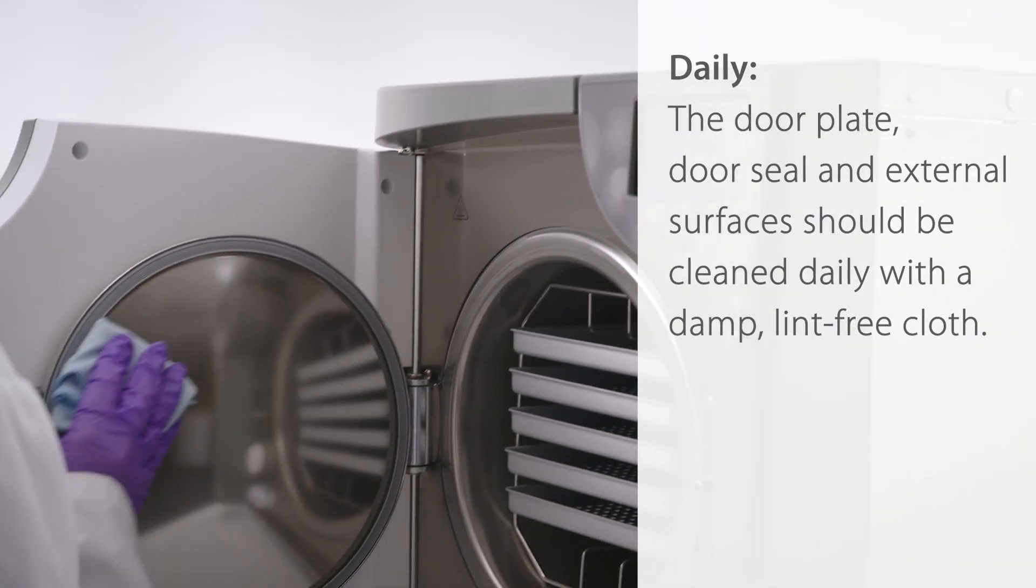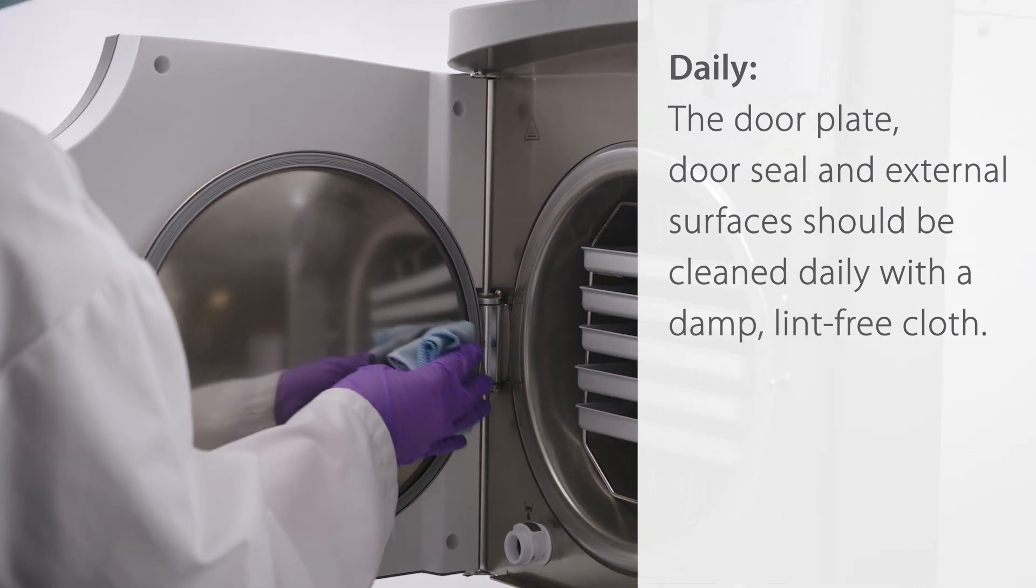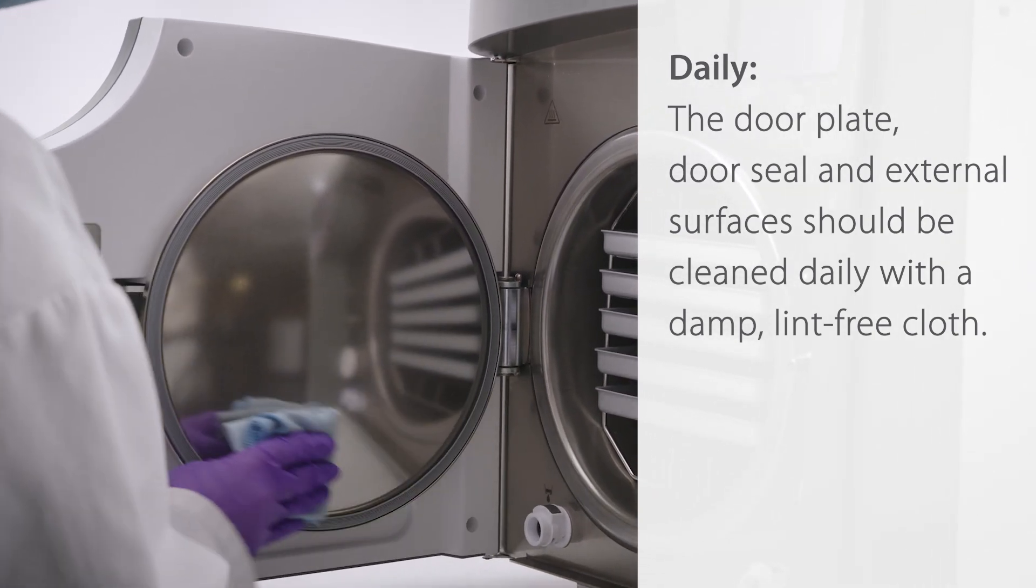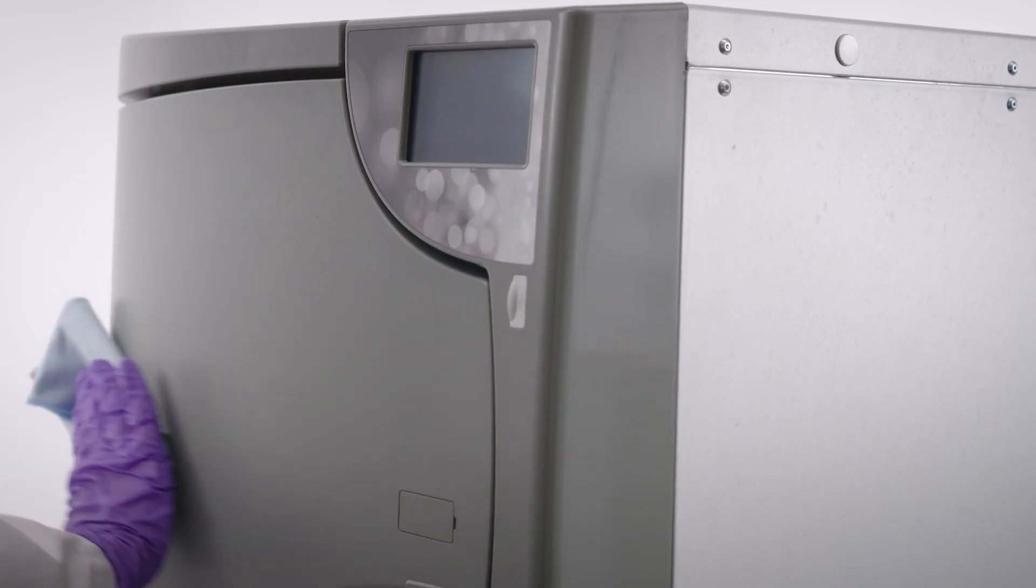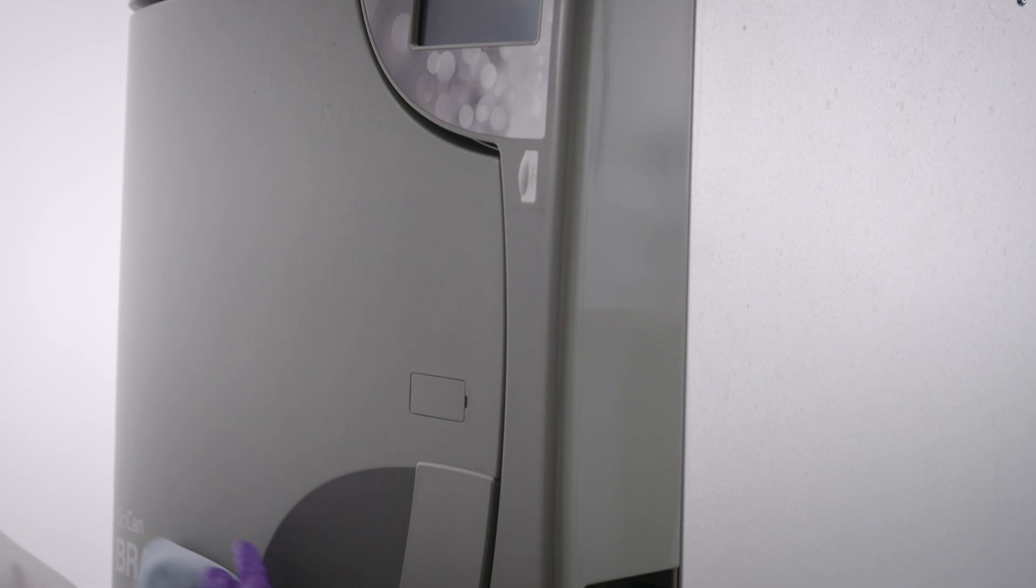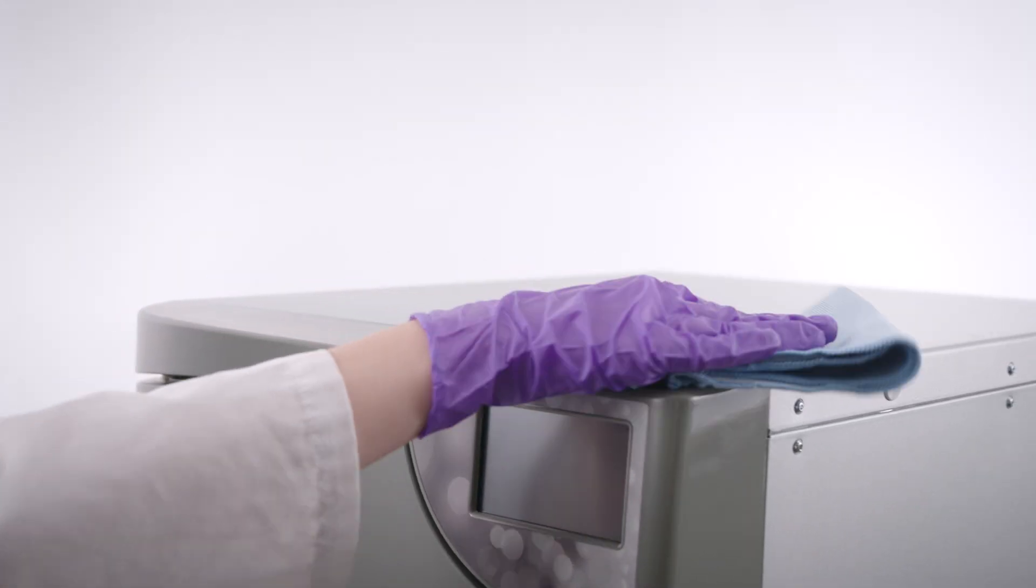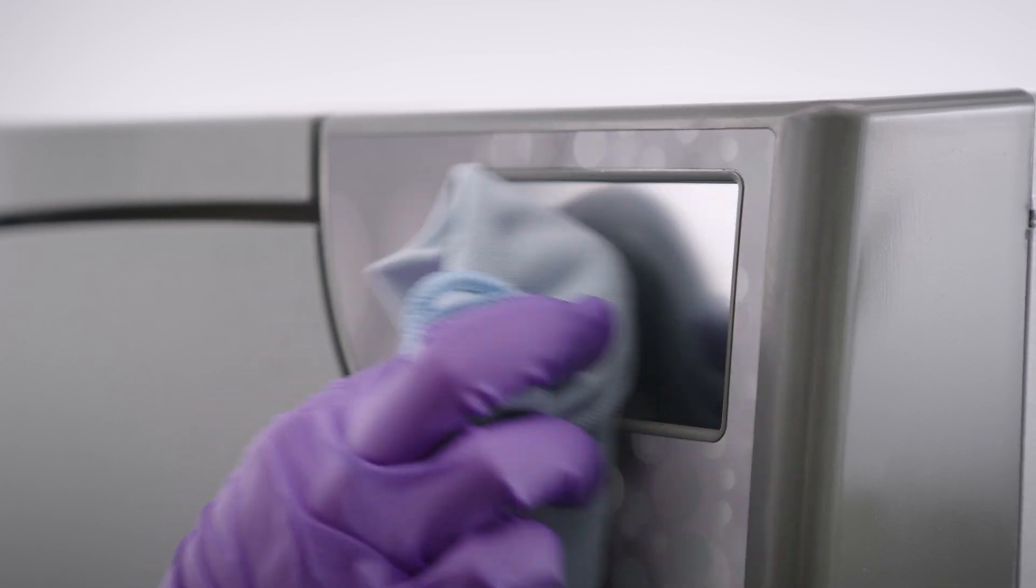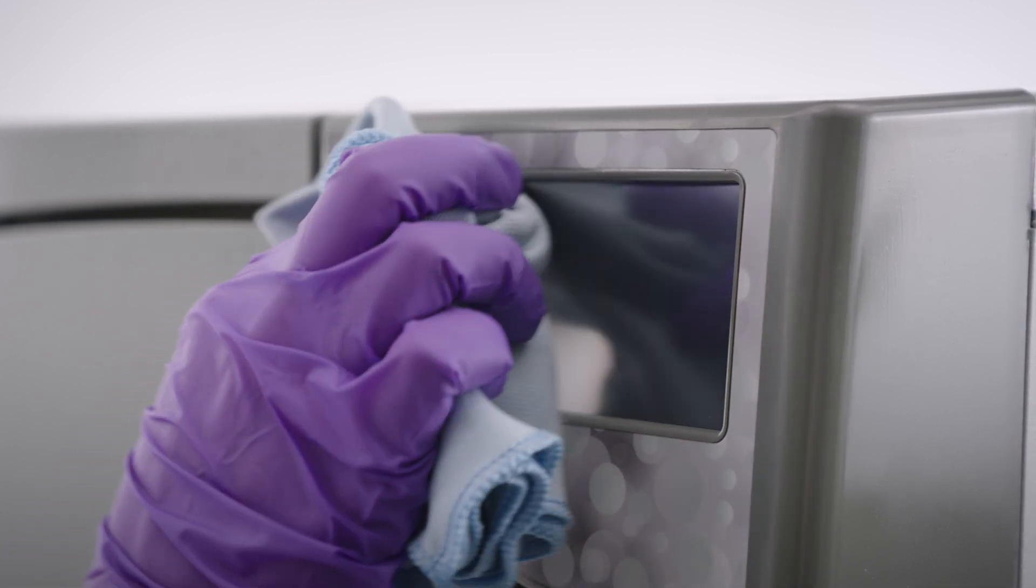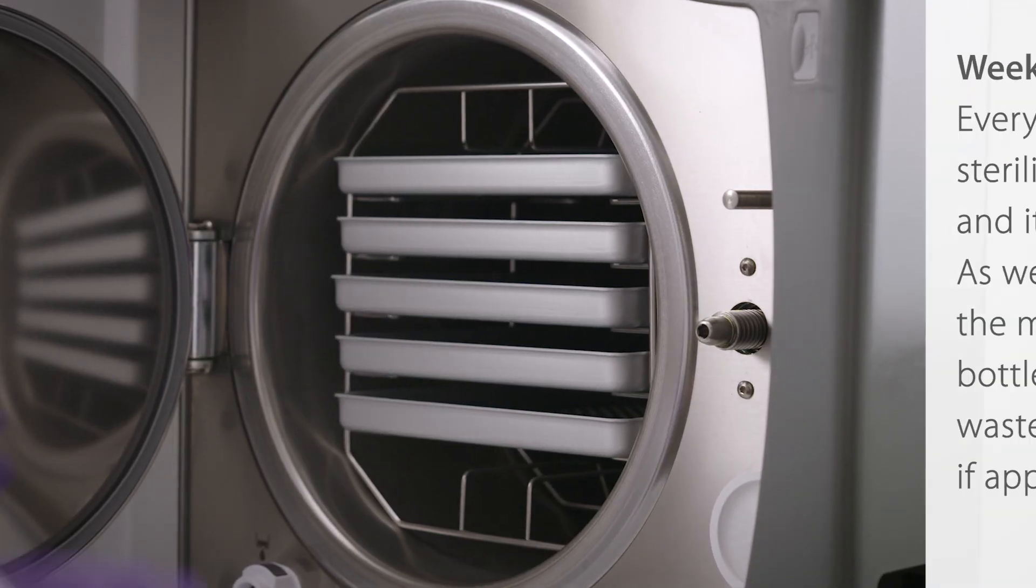Daily, the door plate, door seal, and external surfaces should be cleaned with a damp, lint-free cloth. Clean all the Bravo G4's external parts using a clean, lint-free cloth dampened with water and, if needed, a mild detergent. Dry the surfaces and remove any residue before powering the unit on.